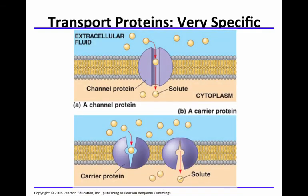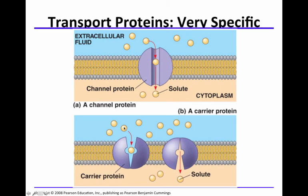Let's look at a pictorial diagram. If this is our extracellular fluid, this would be the plasma membrane, and this would be the inside of the cell — the cytoplasm. This is the solute outside the cell. How does it get inside? One way is via a channel protein transport protein. Another type is the carrier protein: the solute binds to the carrier protein, which changes shape, and now the solute is on the inside of the cell. This binding is very specific — a specific solute will bind to a specific carrier protein.